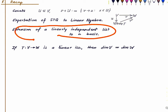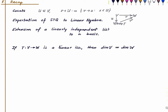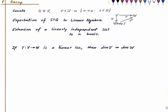We also need to know that any linearly independent list in a vector space can be extended to a basis. This is very basic. And lastly, if we have a linear isomorphism, then the dimensions of the domain and the target space are the same.